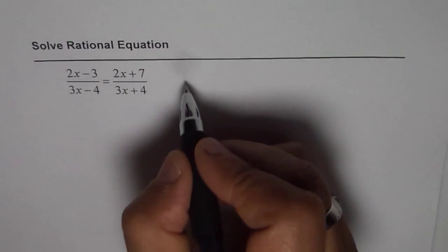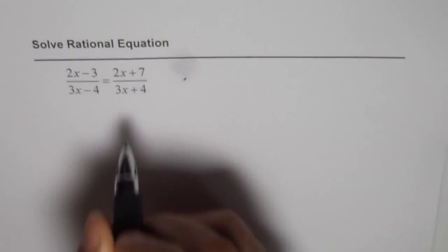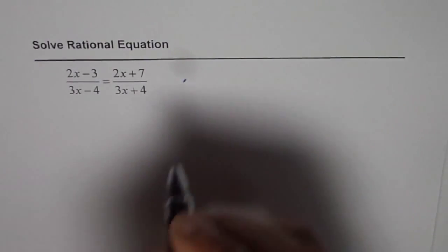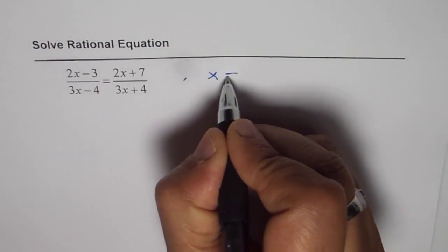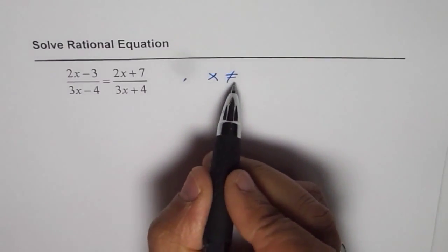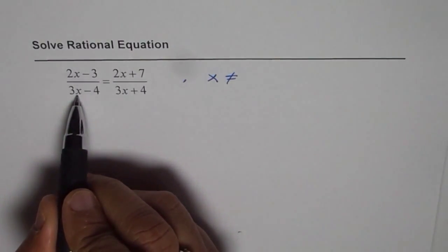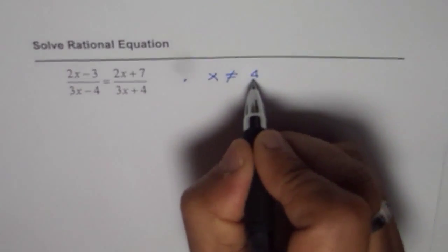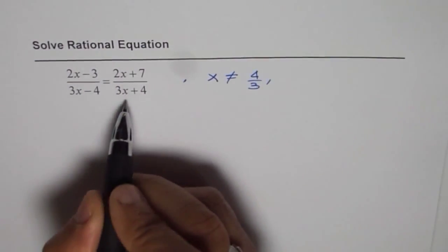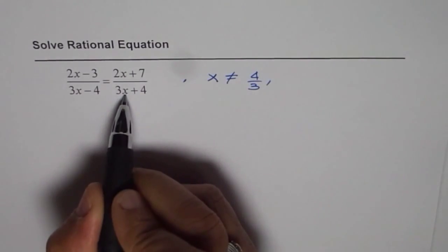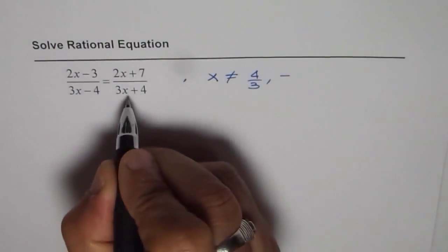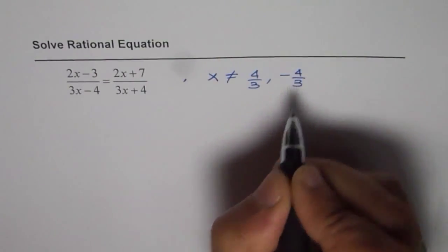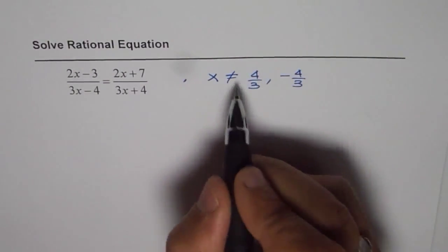Now to begin with, we should state the restrictions. These are the values which will make the denominator zero. So x cannot have a value of 4 over 3, since that will make this denominator zero. And x cannot have minus 4 over 3, as that will make the other denominator zero. So plus or minus 4 over 3 are the restrictions.